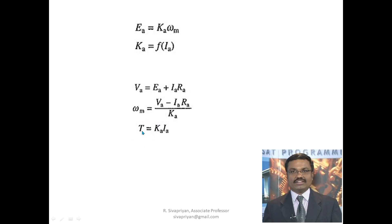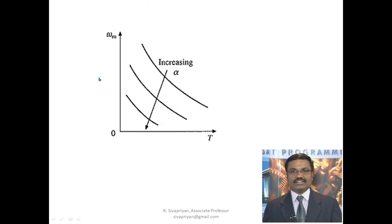Torque T = Ka·ia, but remember Ka is a function of ia. So torque becomes directly proportional to ia². That is why the series motor produces a higher amount of starting torque. These are the equations associated with the half-controlled rectifier fed DC series motor.